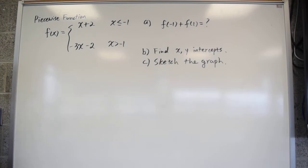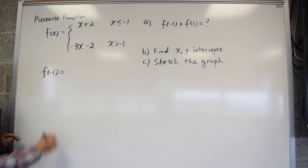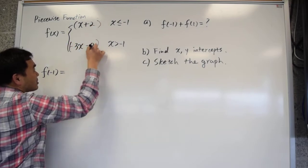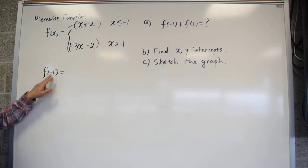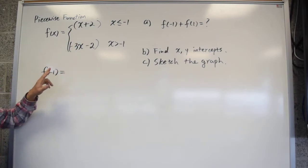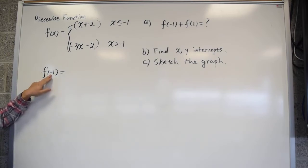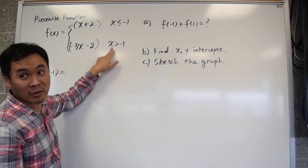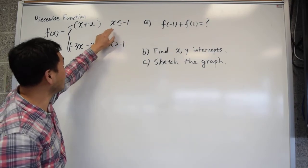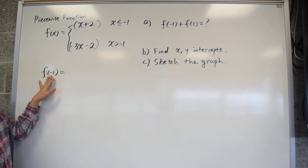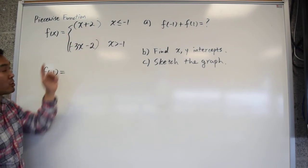Let's think about what f of negative 1 is. You have a piecewise function with two formulas — should you evaluate negative 1 on the first one or the second one? The first one, because x equals negative 1 satisfies 'x less than or equal to negative 1.' Negative 1 is not bigger than negative 1, so only the top condition is satisfied. That's the formula to use.